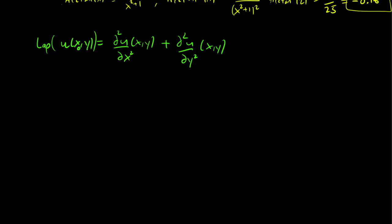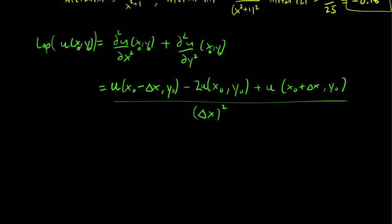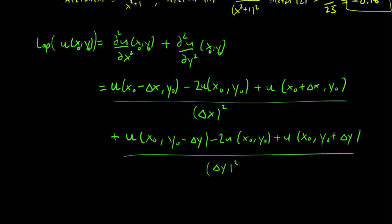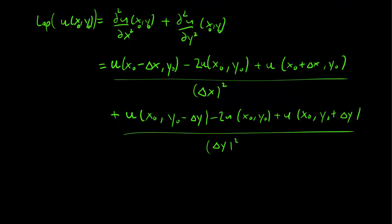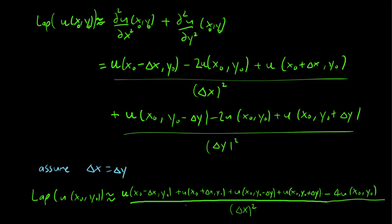Let's label the evaluation point as (x0, y0). We apply our approximation formula for both the x and y derivatives. This seems complicated, but we often make a simplifying assumption: we assume that the step size in x equals the step size in y, just to make our lives easier. With that assumption, the Laplacian of u at (x0, y0) is approximately the four surrounding function values summed together, minus 4·u(x0, y0), all over delta x squared.